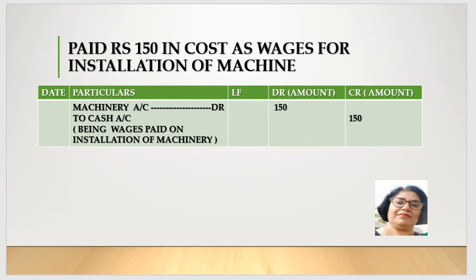So we will do drawing account debit to cash account credit - being life insurance premium paid. Next entry: paid Rs. 150 as wages for the installation of the machine. Since we have paid for the installation of a fixed asset, this is added to the cost of the machinery. So we debit the machinery account by 150 and credit cash account. We do not record it separately. In the narration we write 'being wages paid for installation of the machinery.'